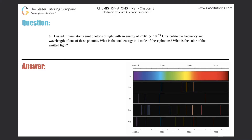Number six: heated lithium atoms emit photons of light with an energy of 2.961 times 10 to the negative 19 joules. Calculate the frequency and wavelength of one of these photons, what is the total energy in one mole of these photons, and what is the color of this emitted light? The only thing they gave us is that the energy is 2.961 times 10 to the negative 19 joules.